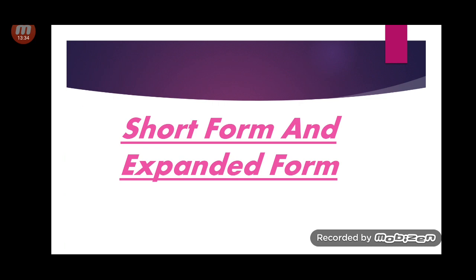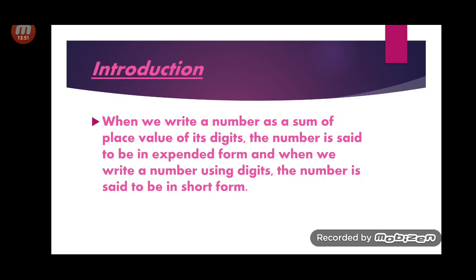Now, when I showed you the contents, I mentioned short form and expanded form — which you have already learnt in third and fourth standard, but now with large numbers. When we write a number as a sum of the place values of its digits, the number is said to be in expanded form. When we write a number using digits only, it is said to be in short form.